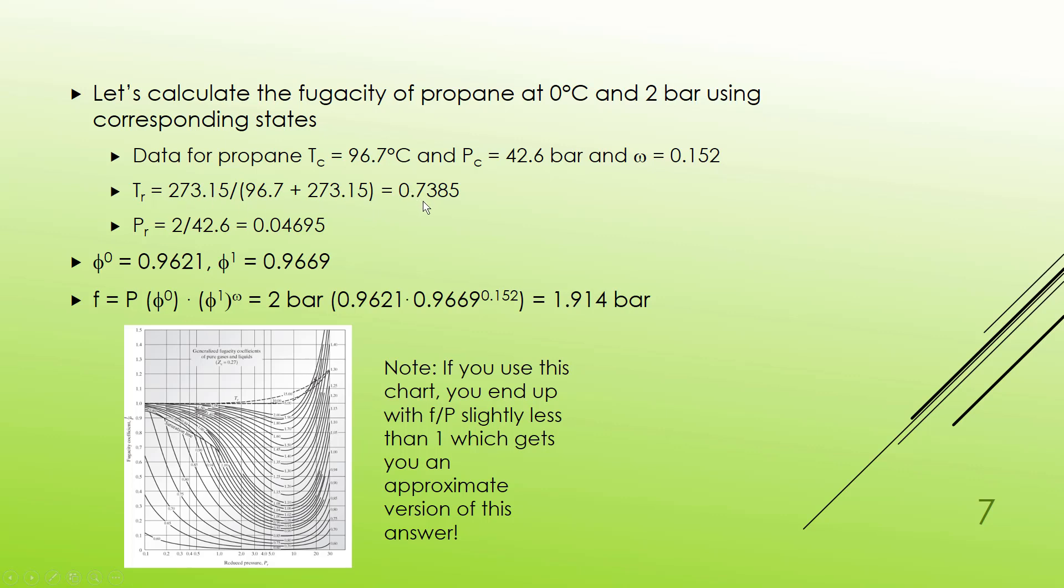So in this case I get a reduced temperature of 0.74 and a reduced pressure of about 0.5. I used data tables for corresponding state numbers and interpolated to get that phi 0 is 0.9621, phi 1 is 0.9669. Now this is a little more complicated than other corresponding states because really the definition says that the log of phi equals the log of phi 0 plus omega log of phi 1.